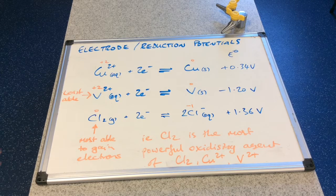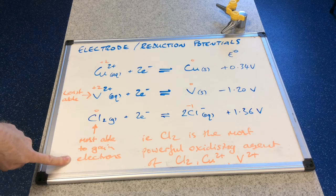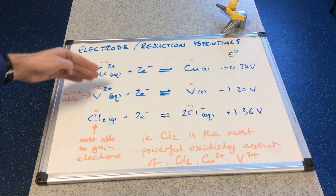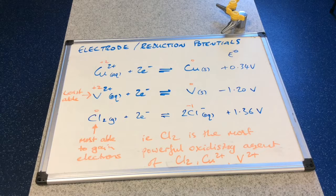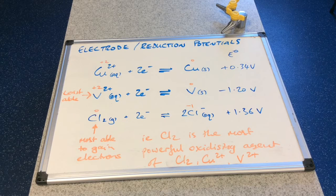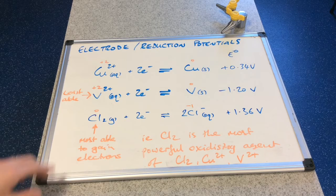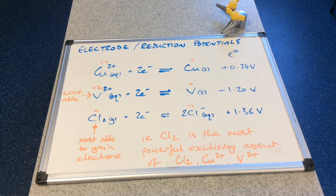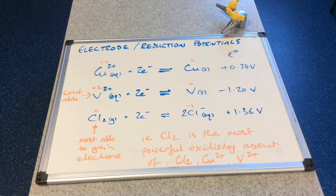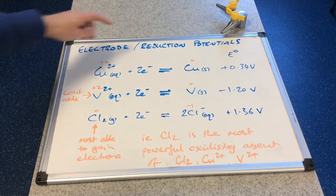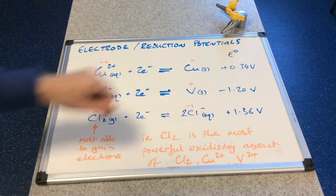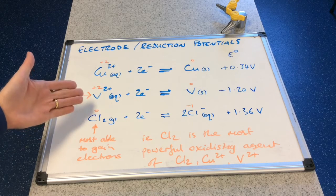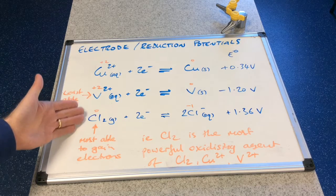So you can see I've added some detail now. Chlorine most able to gain electrons from these three. V2 plus is the least able to gain electrons out of these three. And if we think about our definition for an oxidizing agent, oxidizing agents are electron acceptors. And so again out of these three here, chlorine Cl2 is the most powerful oxidizing agent of those three. And how can we tell? We could tell that because of the size of the standard electrode potential. The more positive the standard electrode potential, the more able the species that can gain electrons in the half equation will gain electrons.